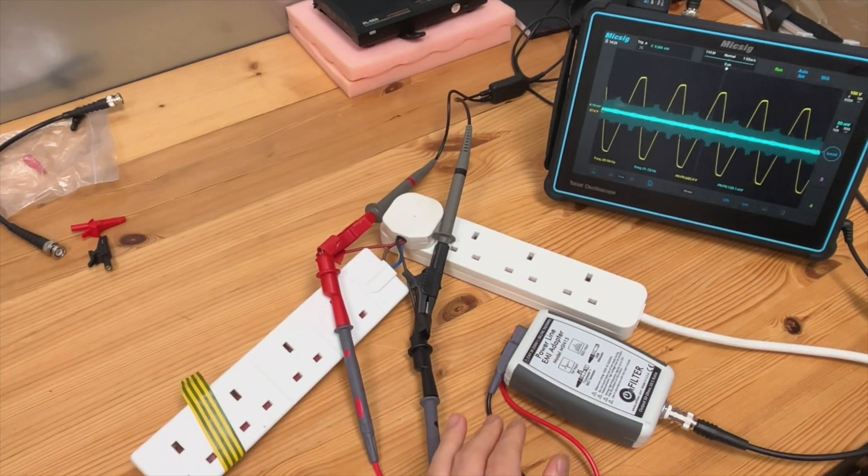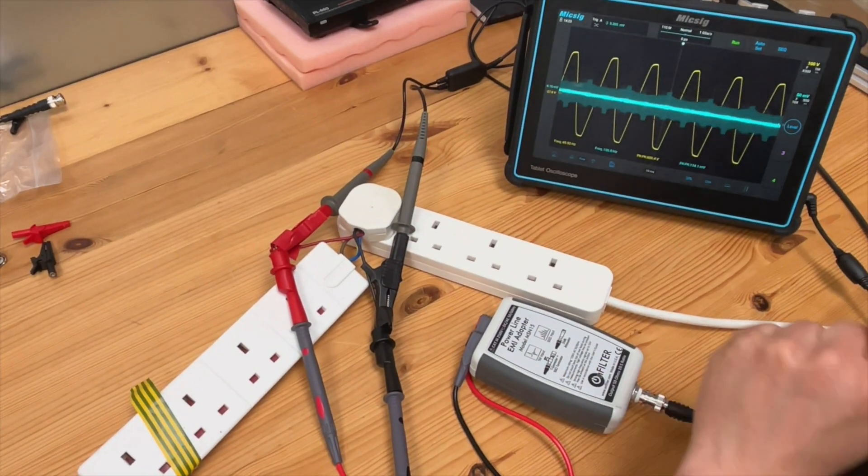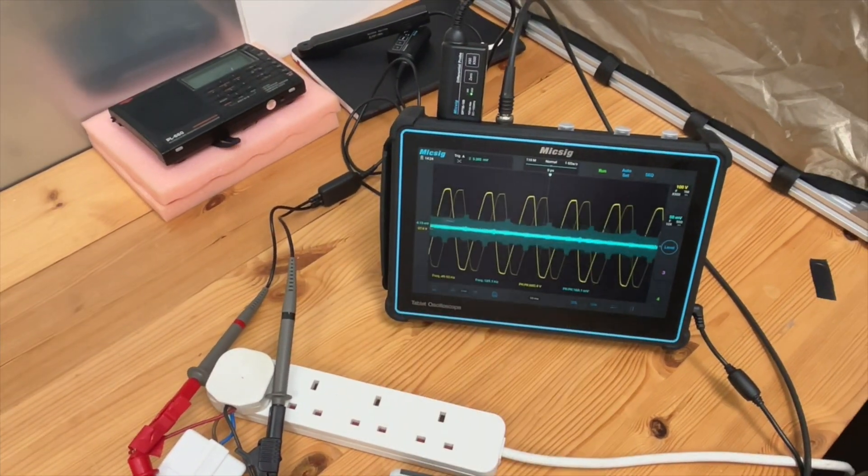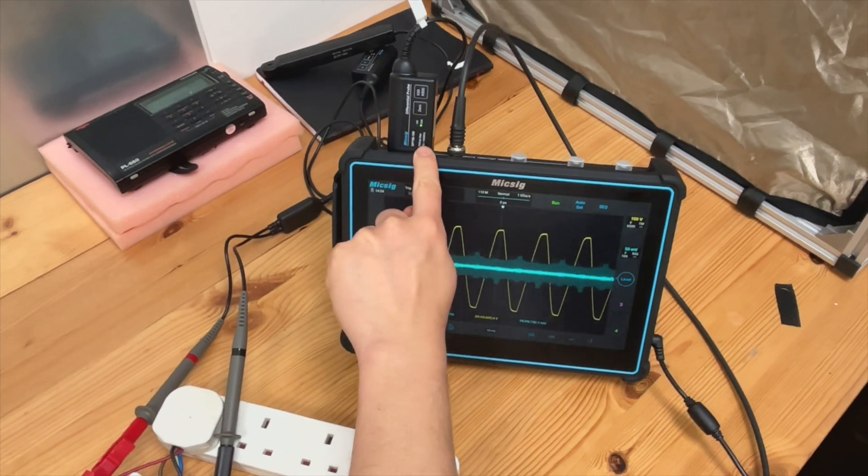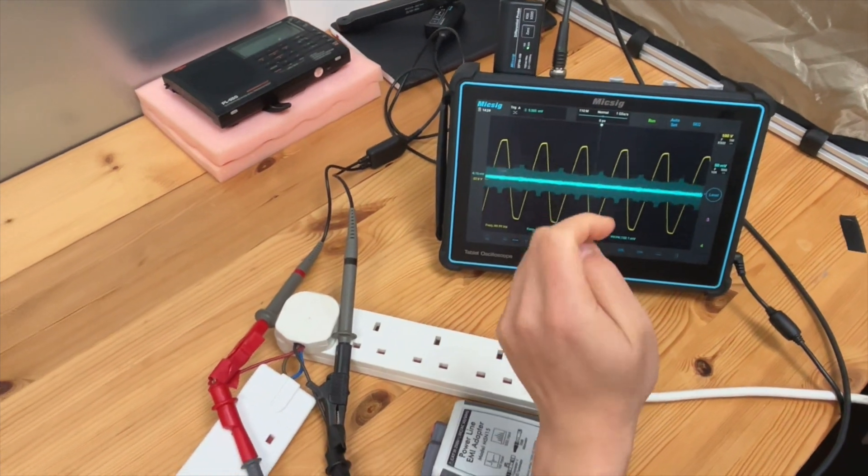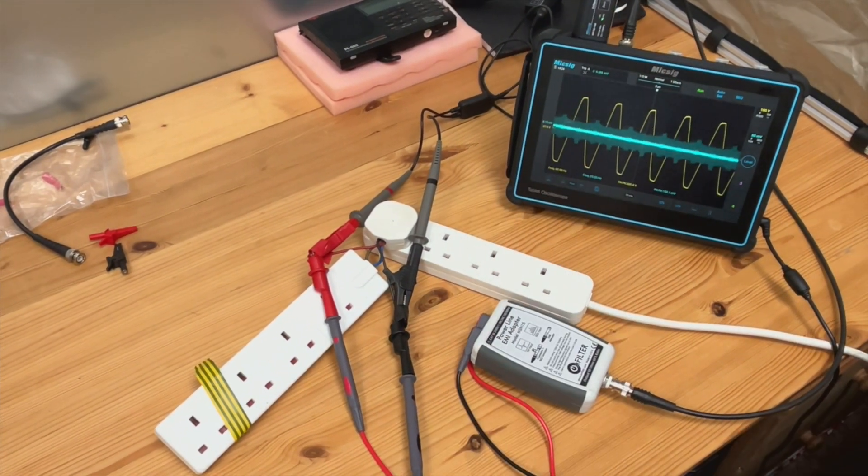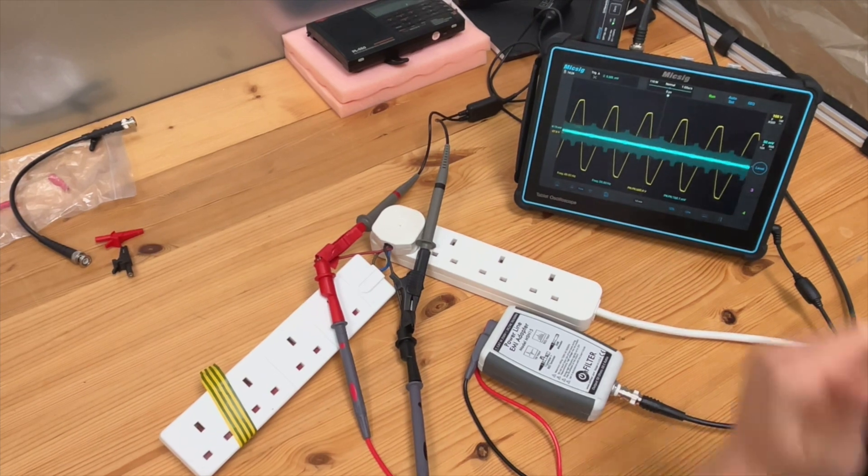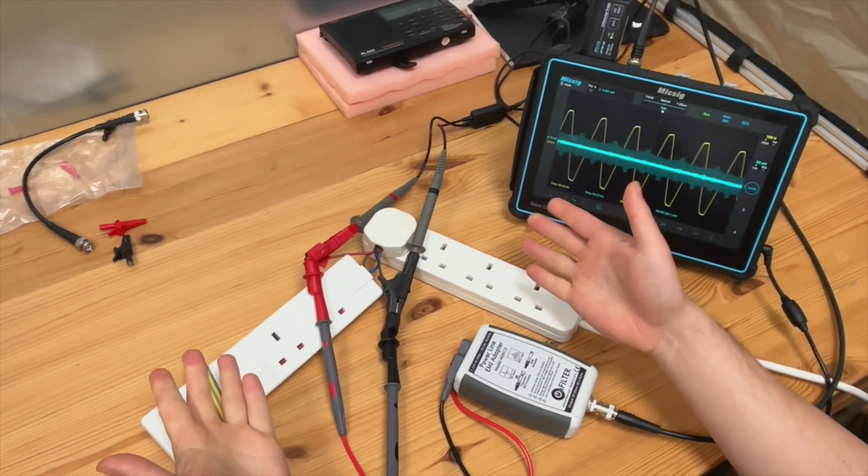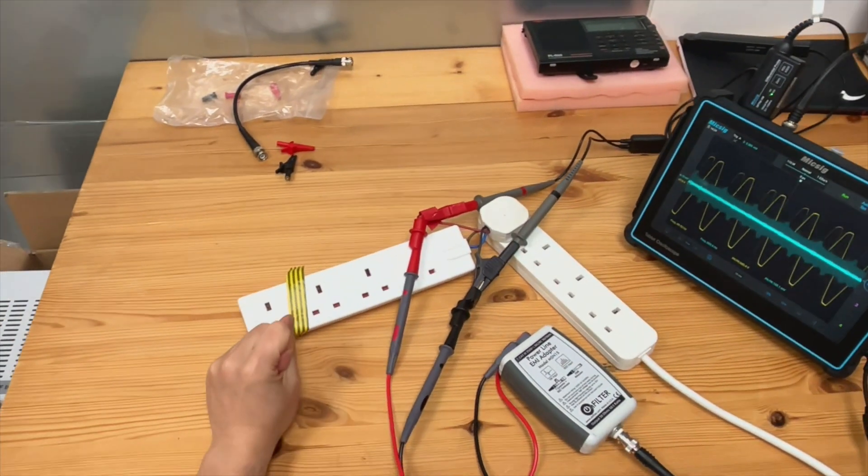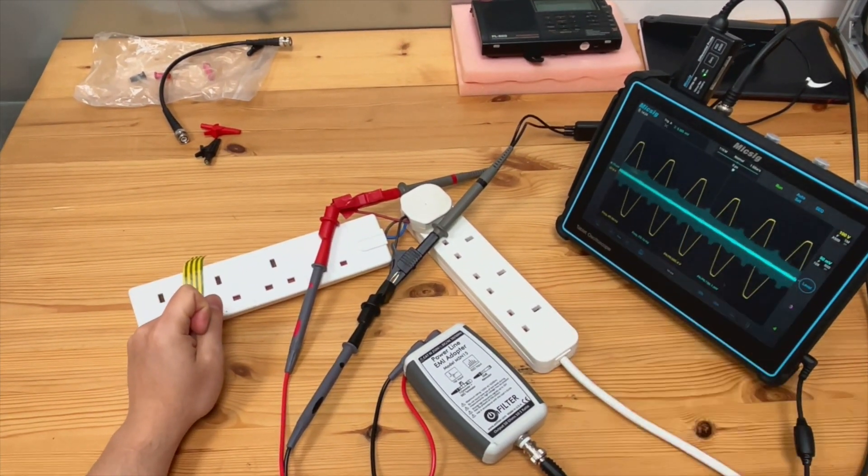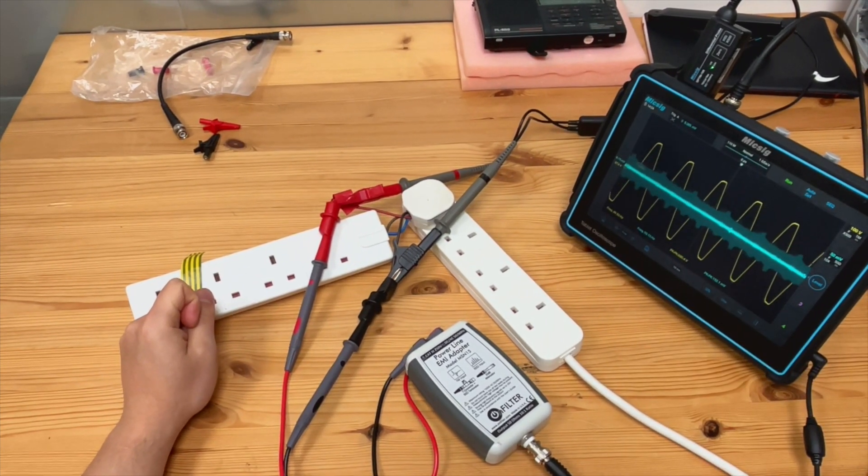As a comparison, we also measure the mains voltage using a differential probe. This differential probe is Micsig, and you can see the bandwidth is DC to 100 megahertz. That's basically our setup. Channel one is connected using a normal differential probe, and channel two is connected to this power line EMI adapter. The setup is extremely simple. We're just measuring the mains voltage. As you can already see, we've got a mains voltage and some noise measured here.